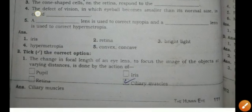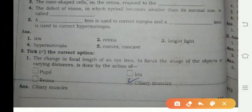Part B: Tick the correct answer. The change in focal length of the eye lens to focus the image of objects at varying distances is done by the action of ciliary muscles.